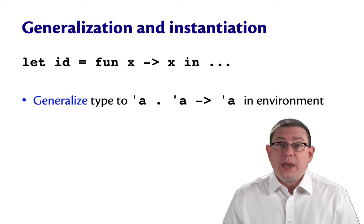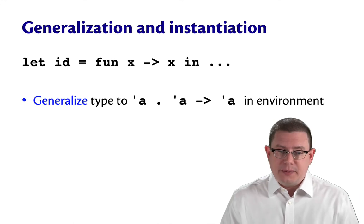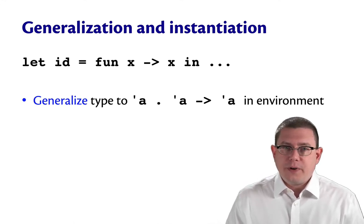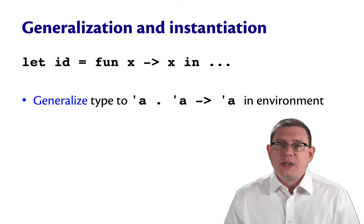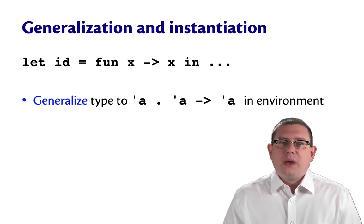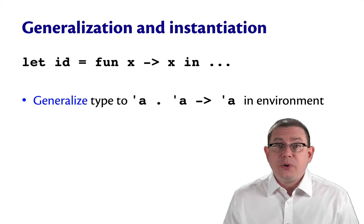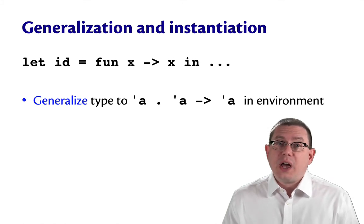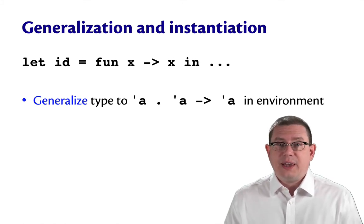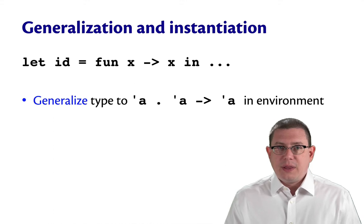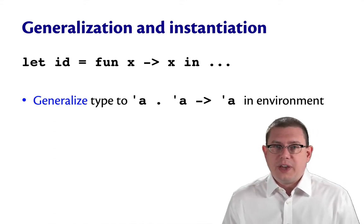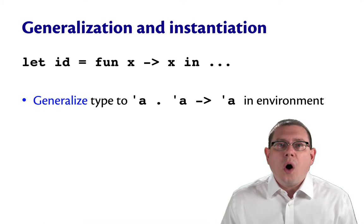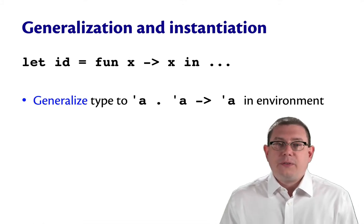So here's how OCaml and HM type inference uses this idea of type schemes. When you get to a polymorphic function like id, which has type alpha arrow alpha, the type inference algorithm will actually generalize that type to a type scheme. So it'll take that alpha arrow alpha and generalize it to alpha dot alpha arrow alpha. Think of that as generalizing in the sense of universal quantification. It's saying for all alpha, the function has that type.